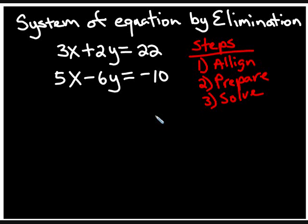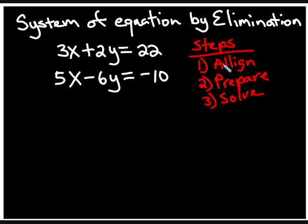To solve a system of equations by elimination, we need to follow three steps. Step number one is to align. What I mean by this is to align the equations. These two equations are aligned the same way — the x is here, the y is here, the equals and the constant — therefore this step is already done for us.